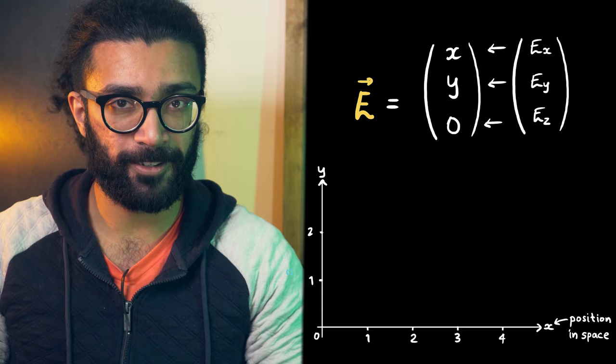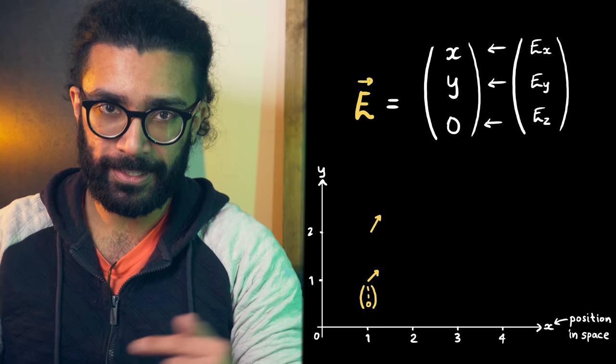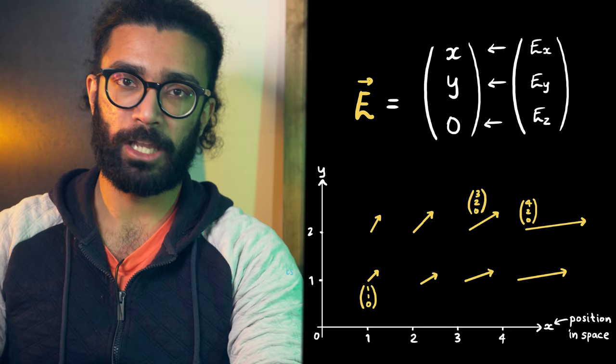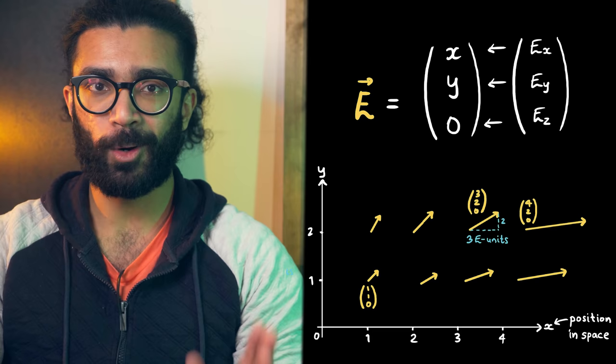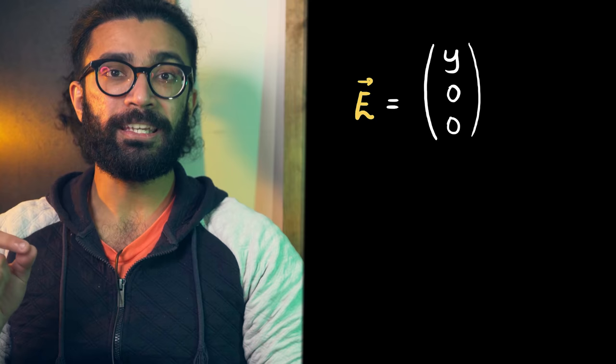It's just that the x component, or the size of the electric field that points along the x direction, can depend on the x coordinate of whatever point in space we happen to be considering. All this is telling us is that when x is small, so when we are further to the left, the electric field pointing in the x direction is weak. And as we move further right, for larger values of x, the electric field pointing this way gets stronger. Now, this might seem slightly confusing, but it's important we are clear about this, and here's why.